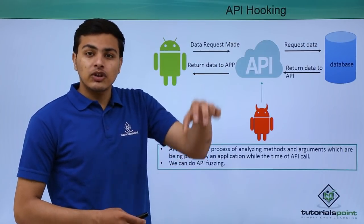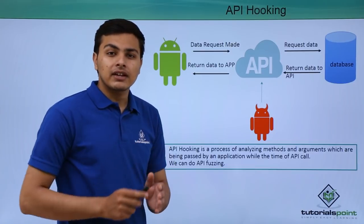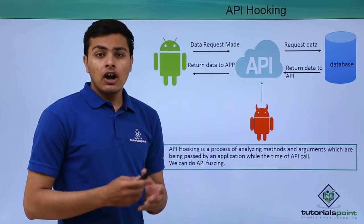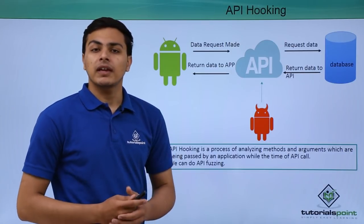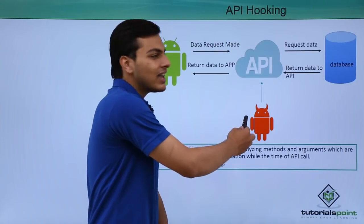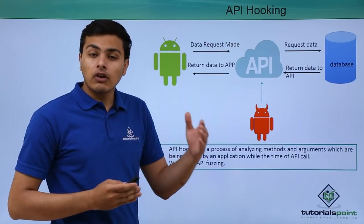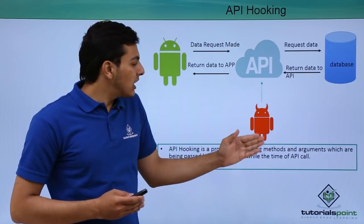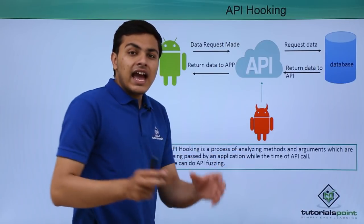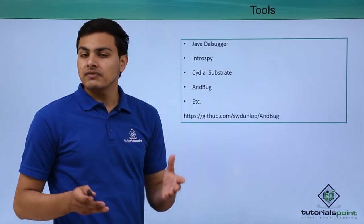API hooking is the process of analyzing methods and the arguments being passed at the time of an API call. For example, when our application makes an API call, we want to see what kind of methods are used and what parameters the application is sending, because once we know the methods and parameters we can do API fuzzing. By using certain tools, we can hook into a particular API and analyze the communication between our Android application and the database.